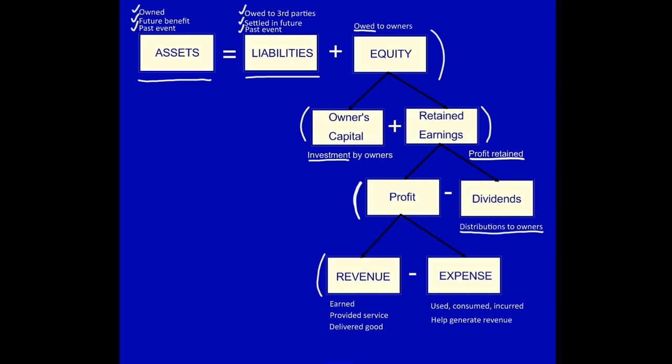Profit is made up of two things. Revenue, which must be earned — that means we must have provided, notice the past tense, a service or delivered, again past tense, a good. And finally, expenses: used, consumed, or incurred. This is a cost that has helped us in order to generate the revenue. Notice that revenues lead and expenses follow.